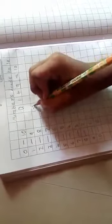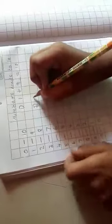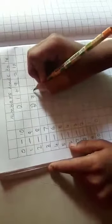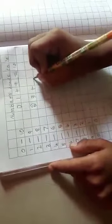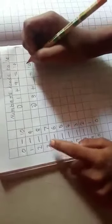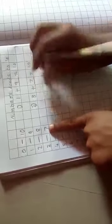Second example. 3 plus something is equal to 10. Here is 7. Answer is 7.